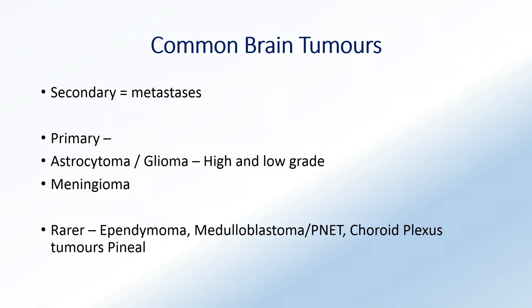The most common brain tumors are secondary - the metastatic tumors that arise from other parts of the body. When I first found out this, I was surprised that they are the most common category of brain tumors, because the brain is the organ that tumor cells preferentially metastasize to, and we don't really know why that is. Primary brain tumors such as astrocytomas and gliomas - which can be high and low-grade - and meningiomas are also very common. Then you have some rarer brain tumors, some of which are pediatric: ependymoma, medulloblastoma, PNET, choroid plexus, and tumors arising from the pineal gland.